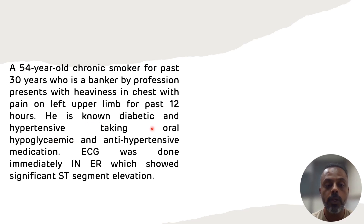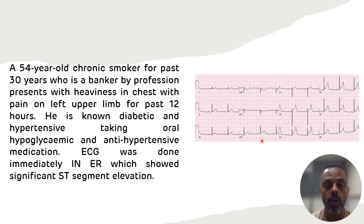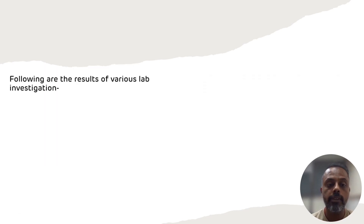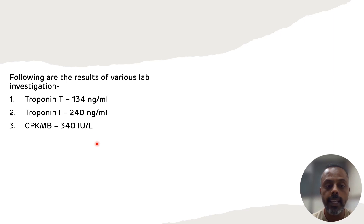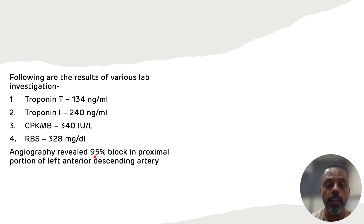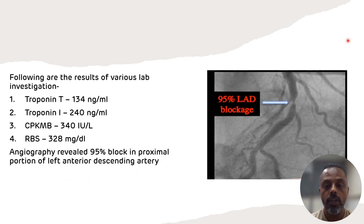He is a known diabetic and hypertensive, taking oral hypoglycemic and antihypertensive medication. On ECG done in the ER, it showed significant ST segment elevation. Laboratory investigations show that troponin T was 134 nanogram per ml, troponin I was 240 nanogram per ml, CPK-MB was 340 international unit per liter, and RBS was 328 mg per deciliter. Angiography revealed a 95% block in the proximal portion of the left anterior descending artery.